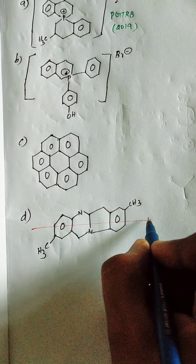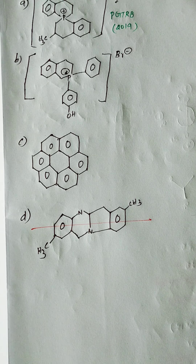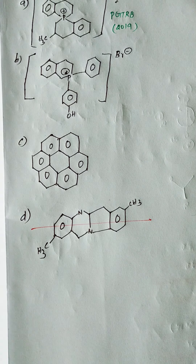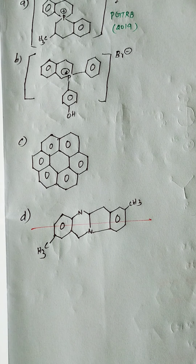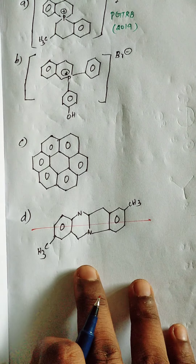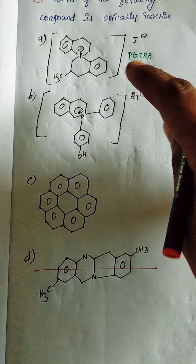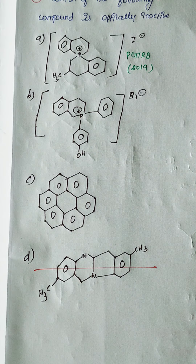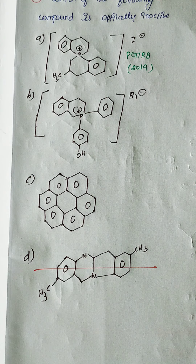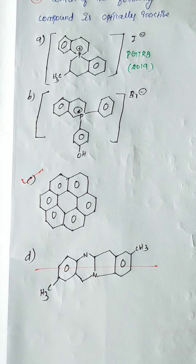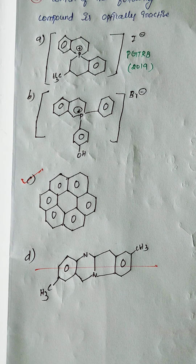For option D, the molecule cannot be cut into two equal halves, and the methyl group on the side makes it asymmetric, so it is optically active. Therefore options A, B, and D are optically active, and option C is the correct answer — it is optically inactive.